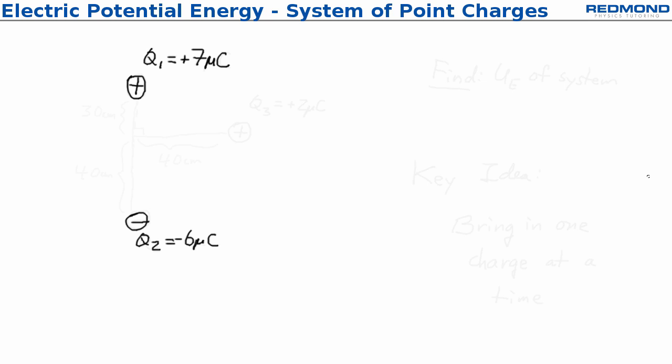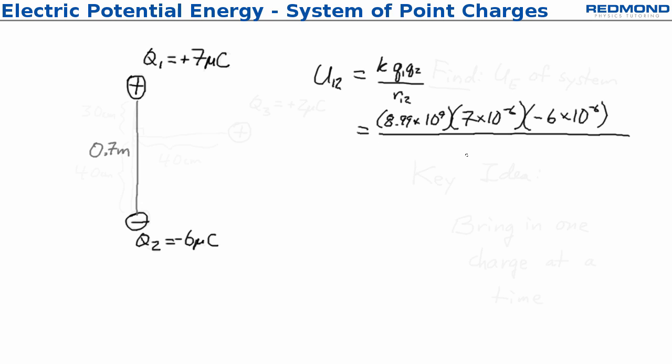We bring in the second charge. Now we can calculate the electric potential energy between these two charges, so I'll call it u12 to show that it's between q1 and q2, and we calculate this as k*q1*q2 over r12. When I substitute in, the electric potential energy between charge 1 and charge 2 is -0.54 joules.